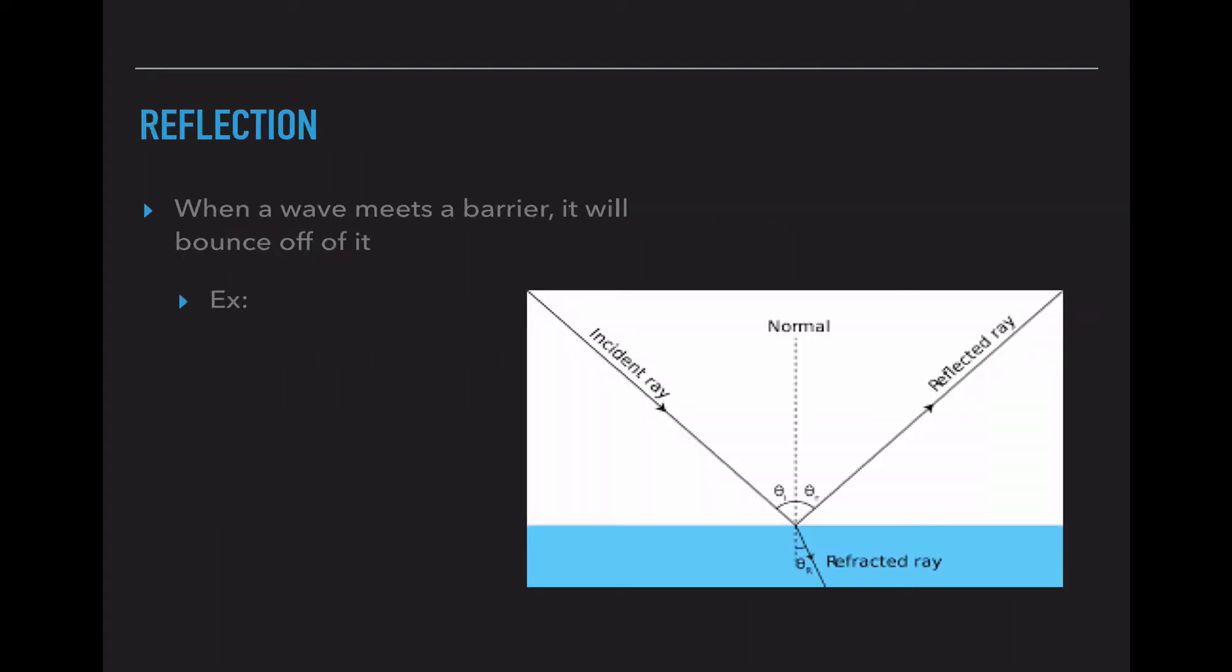The first interaction is reflection. When a wave hits a barrier it will bounce off of it. And the easiest example of this is a mirror. You see your image in a reflection in the mirror because the light waves hit the mirror and bounce backwards. That's why if you move yourself to the left of the mirror you can see more items on the right of the mirror. If you are here you're going to see things over here in the room next to you because of that reflection aspect of the light waves.